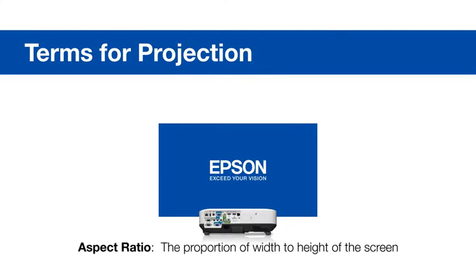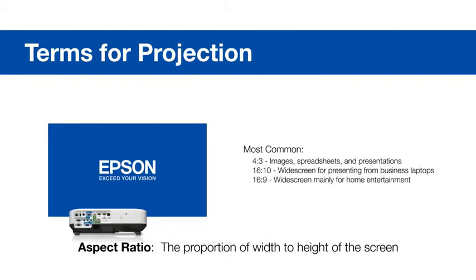Aspect ratio is the proportion of width to height of the screen. The most common ratios are 4 by 3, 16 by 10, and 16 by 9. The Epson throw distance calculator defaults to 16 by 10.